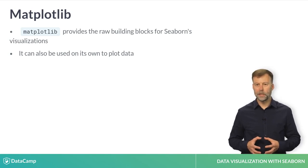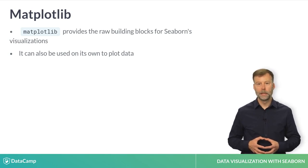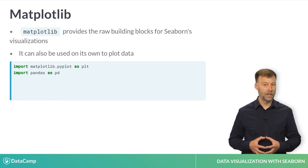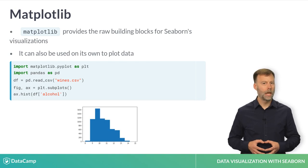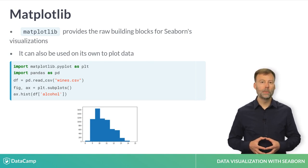When working with Seaborn, it is helpful to understand some of the underlying Matplotlib constructs. This brief example shows how to plot a column in a Pandas data frame as a histogram. This specific example includes information about the alcohol content of several different types of Portuguese wines. If you do not understand this code example, you may want to review some introductory Python courses. The rest of this course will assume you understand basic Python and Pandas usage.